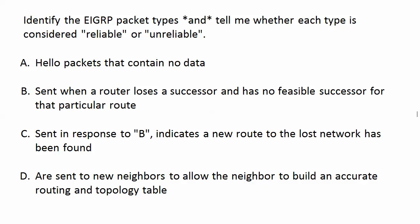Hopefully we get C: sent in response to that query packet is a reply packet, and that indicates that a new route to the lost network has been found from one of those neighbors. Now D: the packets that are sent to new neighbors to allow that neighbor to build an accurate routing and topology table — that's an update packet. Those are also sent out when there is a change in the network topology.